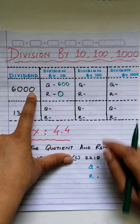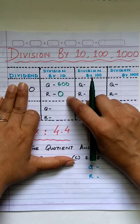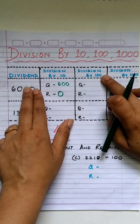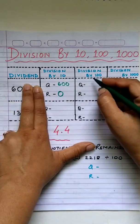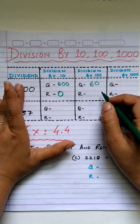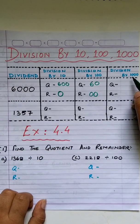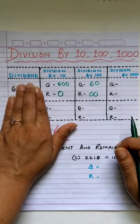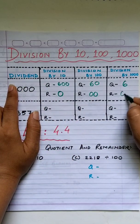Whenever 6,000 is divided by 10, hide the last digit — this is the quotient, and the hidden digit is the remainder. Similarly, when dividing by 100, hide the last two digits since 100 has two zeros — the remaining number is the quotient and the hidden digits are the remainder. For 1,000, hide three digits at the ones, tens, and hundreds place. The remaining digit becomes the quotient and the hidden digits become the remainder.